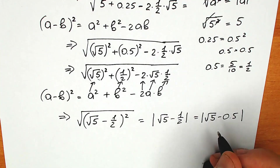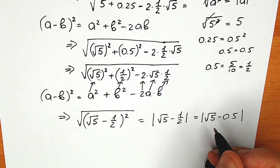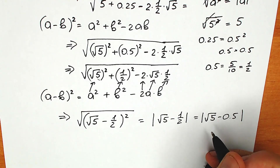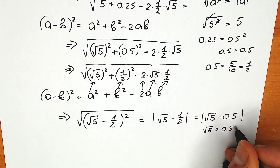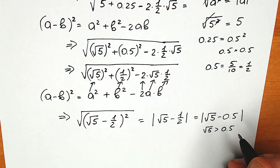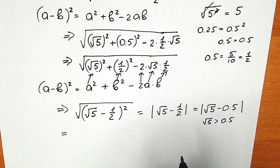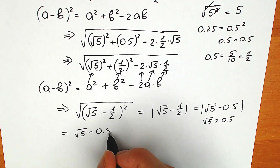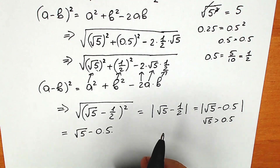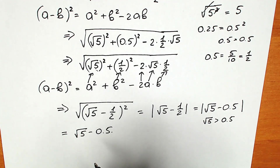To simplify the absolute value expression, we need to find the sign of (√5 − 0.5). Square root of 5 is approximately 2.2-something, which is definitely greater than 0.5. So we can get rid of the absolute value brackets. The result is simply √5 − 0.5, and we can't simplify this further. So this is our final answer.